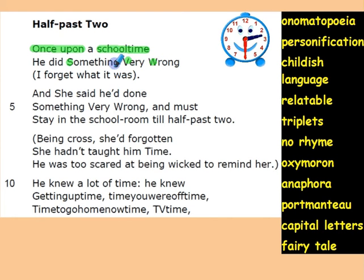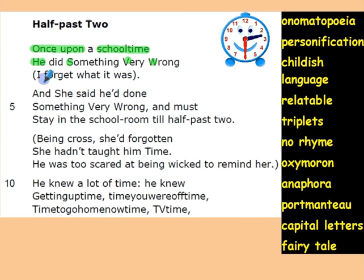You can see these three words use capital letters, so there is an extra emphasis that he did something very wrong — it was not a little thing, it was quite a big thing. The poet here is using a third person; the poet is a narrator, narrating this whole incident. He did something very wrong. 'I forget what it was' — we cannot remember what it was, but that is not important. The important thing is that whatever he did was very, very wrong.